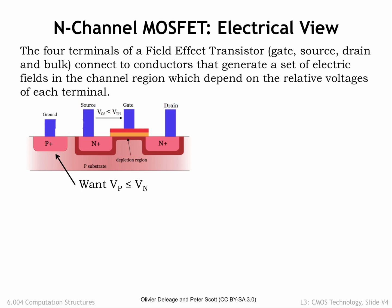The P-plus terminal on the left of the diagram is the connection to the P-type substrate. For the MOSFET to operate correctly, the substrate must always have a voltage less than or equal to the voltage of the source and drain. We'll have specific rules about how to connect up this terminal.